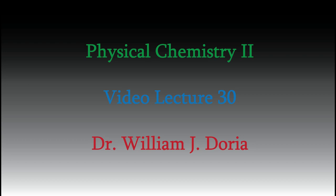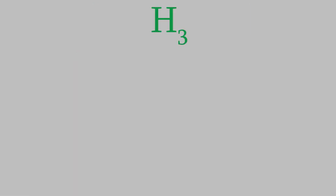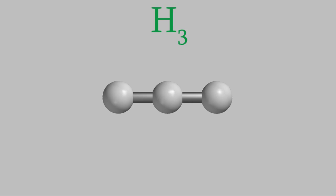Hi, and welcome back to my series of videos for Physical Chemistry 2. In the past few videos, we've looked at molecular orbitals and energy level diagrams. So far, we've only been looking at MOs for diatomic molecules, both homonuclear and heteronuclear. But what about larger molecules? Today, we'll start looking at energy level diagrams for some simple larger molecules. Let's look at the simplest possible case containing three nuclei: an H3 molecule consisting of three hydrogen atoms in a straight line.